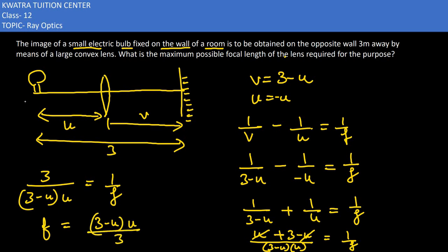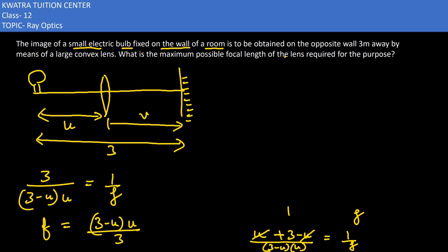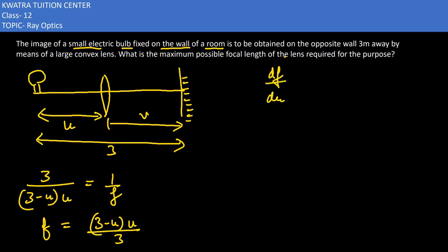Now we do df/du equal to zero, because we need to find the maximum focal length — how much focal length can be maximum. So f equals (3 minus u) times u over 3, and we set df/du equal to zero.